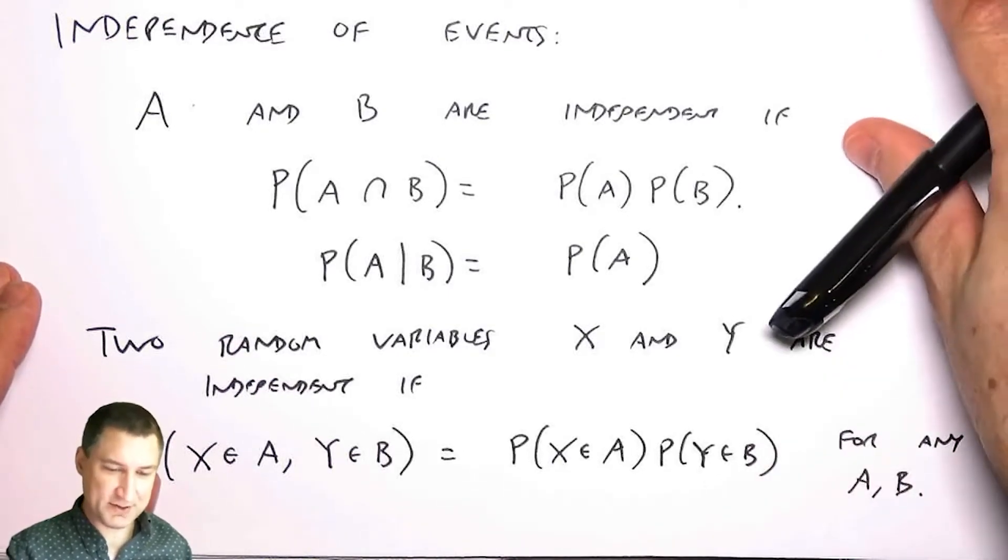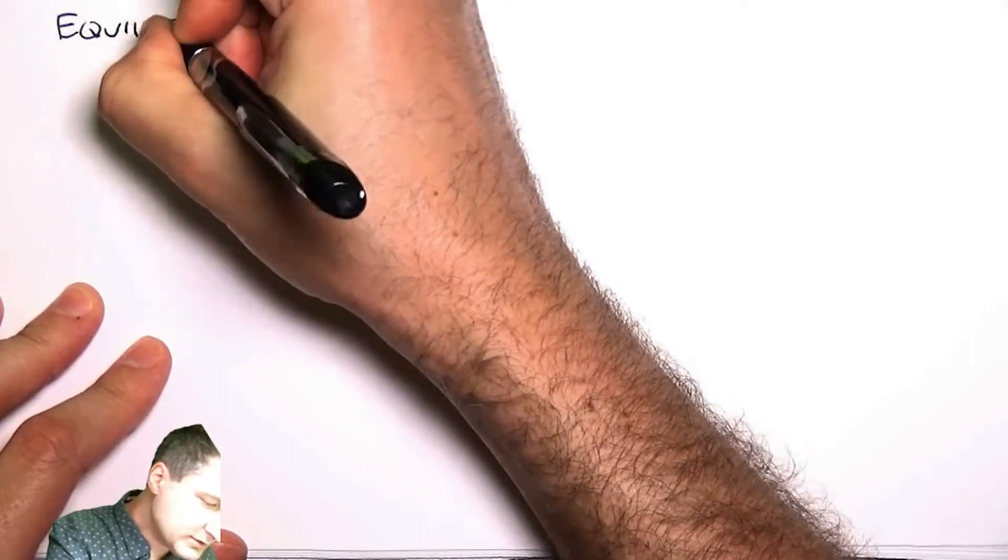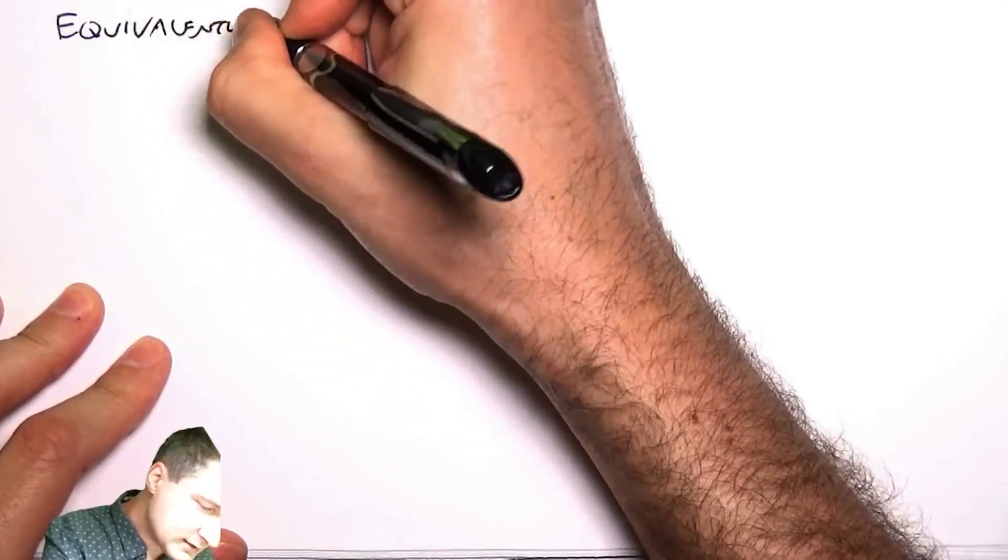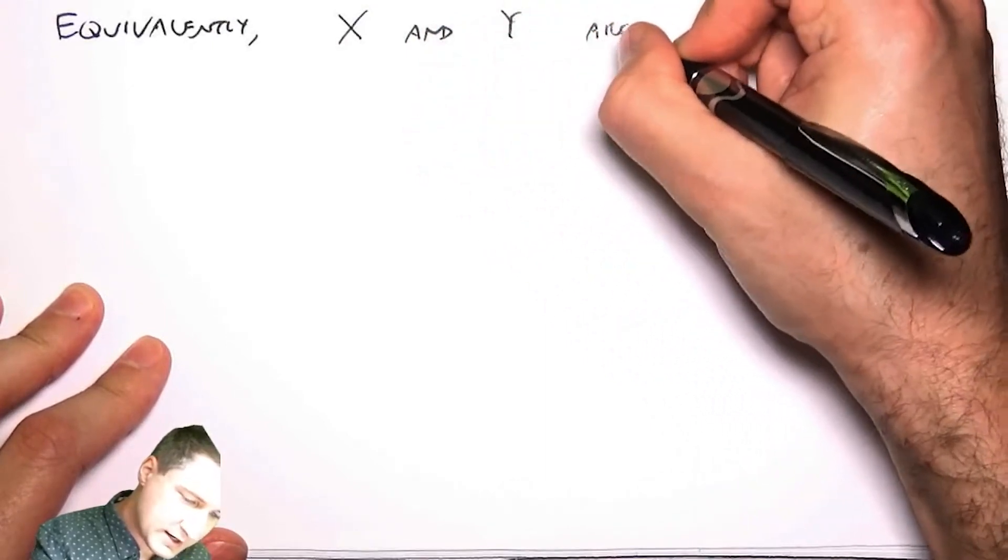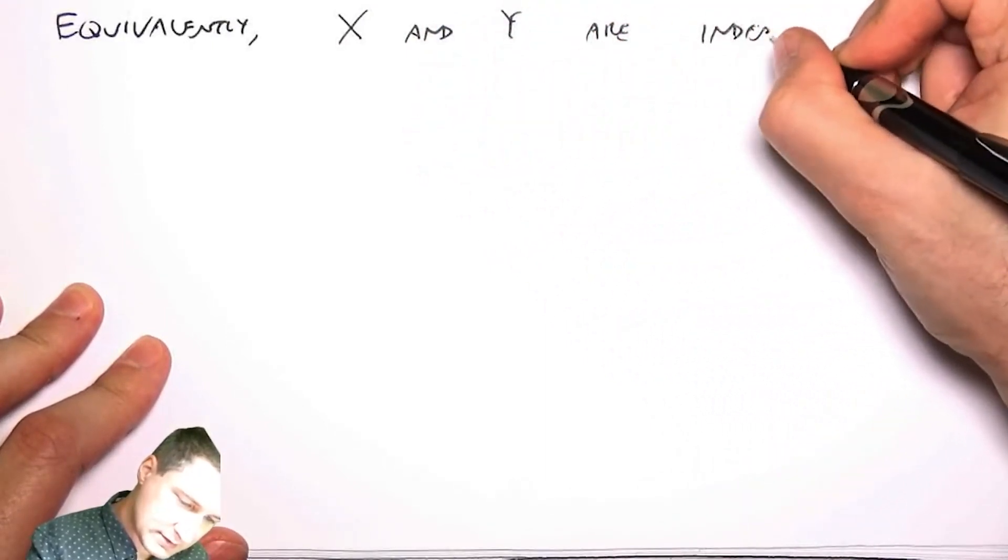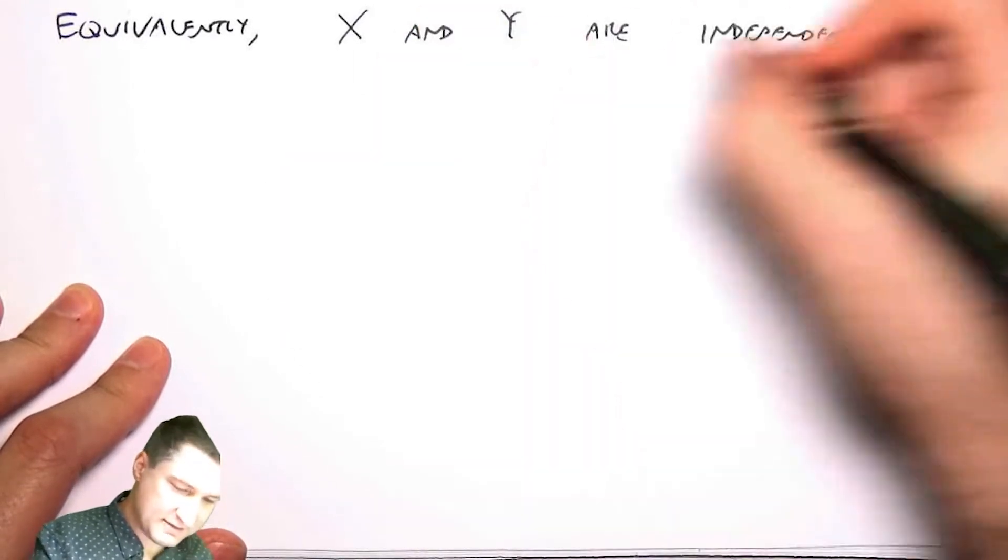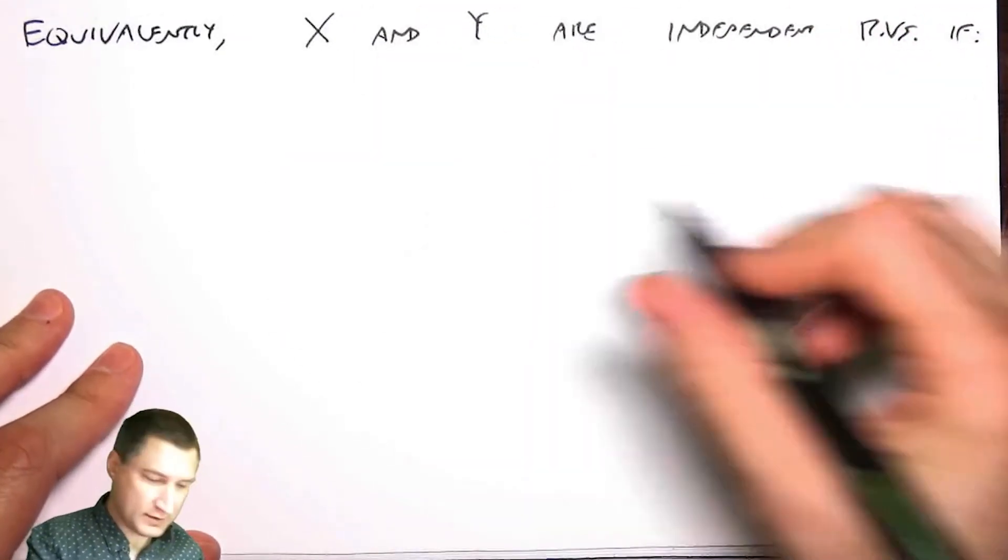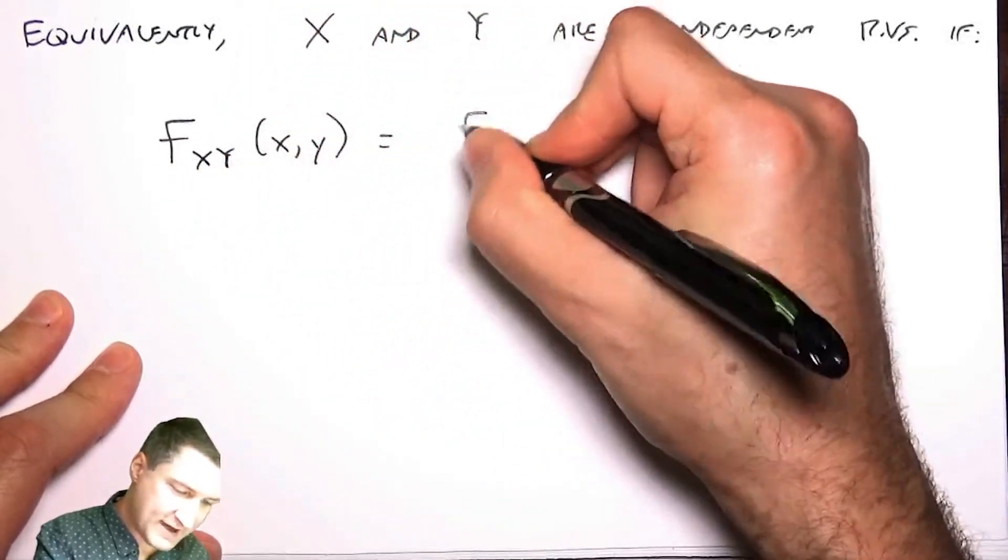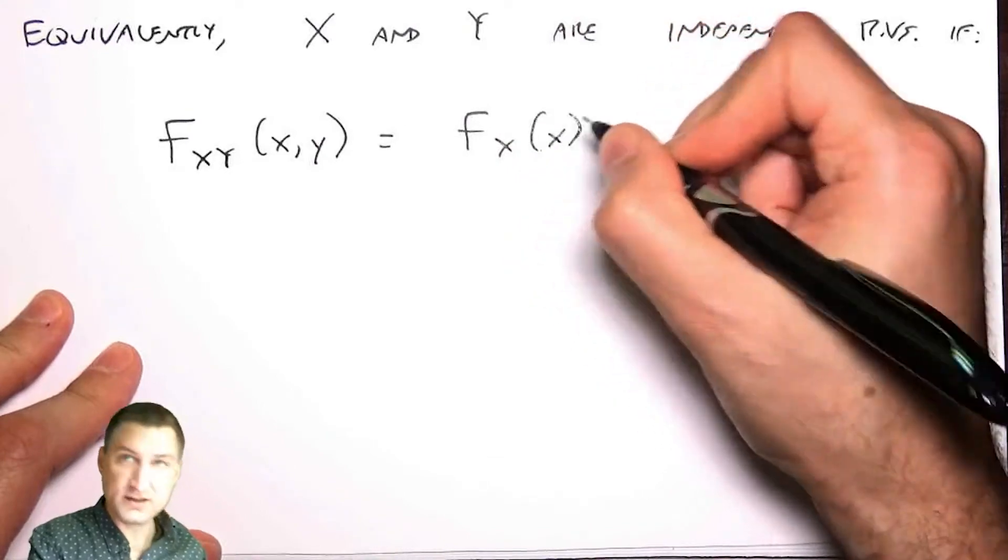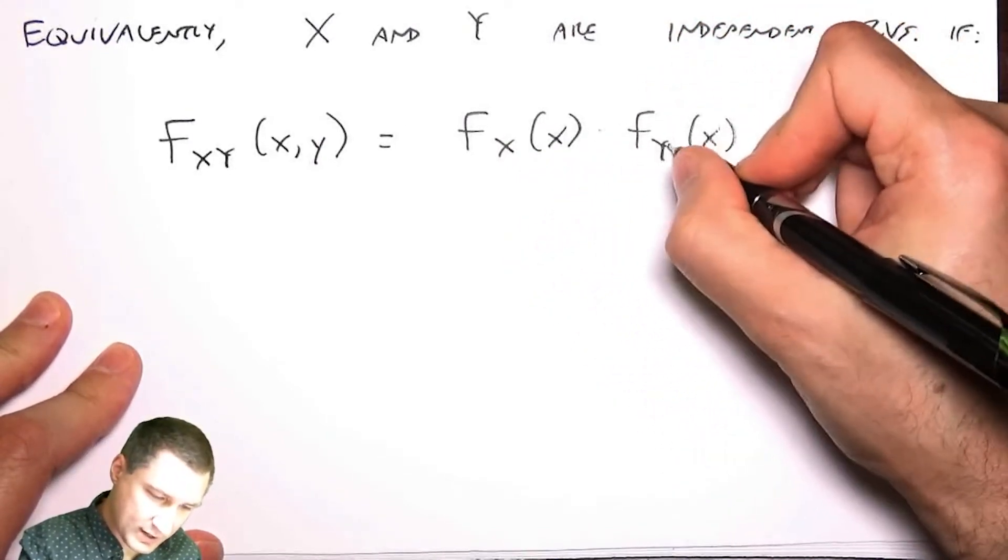An equivalent statement, which is just that - let me just say it explicitly - that X and Y are independent random variables if their joint PDF factors as the PDF in X times the PDF in Y.